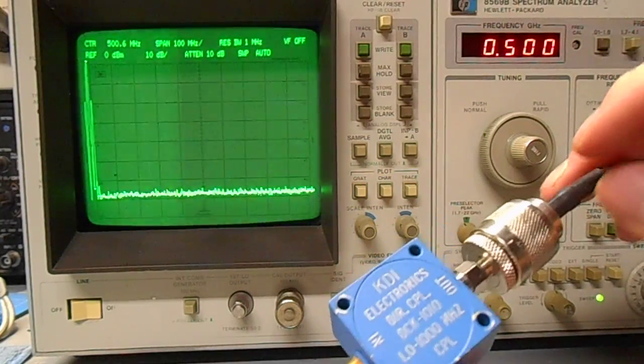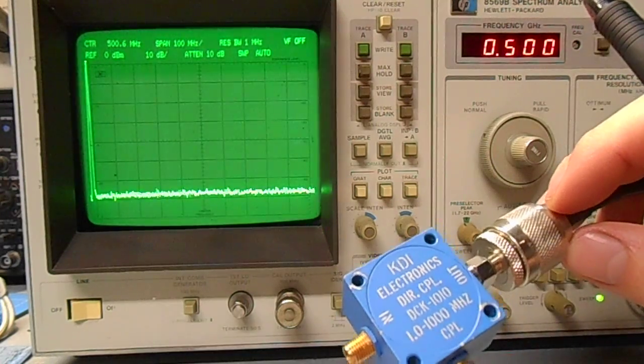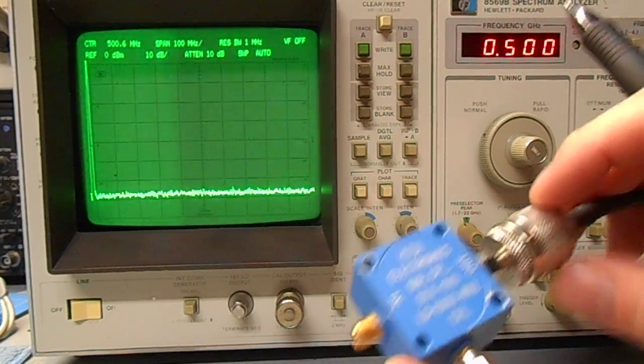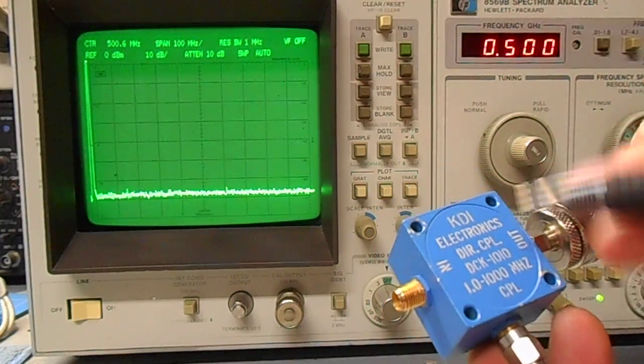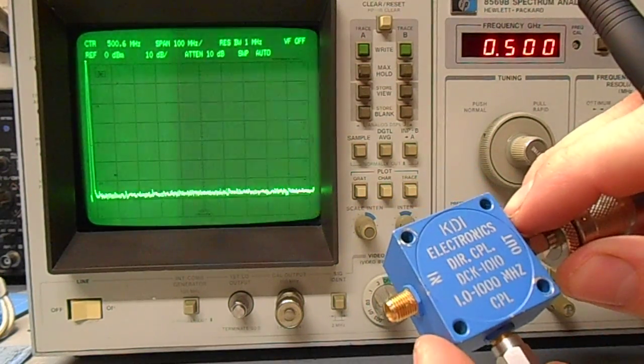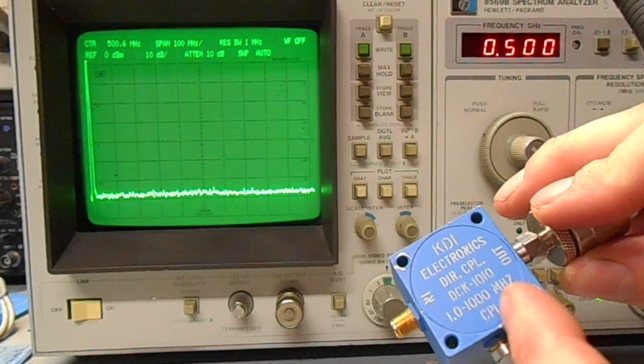I have a signal generator, sweep generator, sweeping between about 10 MHz and 1.4 GHz right now. And I have a directional coupler. This is a KDI DCK1010 directional coupler designed for 1 MHz to 1000 MHz.